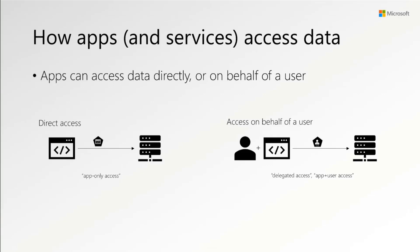There are two ways we're going to talk about today in which an application or a service — I'll use those interchangeably — can access data at a service. When I say access data, generally speaking, we're talking about an API request, not necessarily REST, but usually some form of API. One simple way is direct access, also known as service to service.